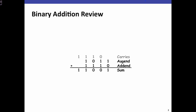I'm going to do a quick review of binary addition. In binary addition, we're adding two numbers, the augend and the addend together, to produce the sum. We do this by, in each bit position, summing the input bits in that position to produce a sum bit and a carryout that goes into the next column.